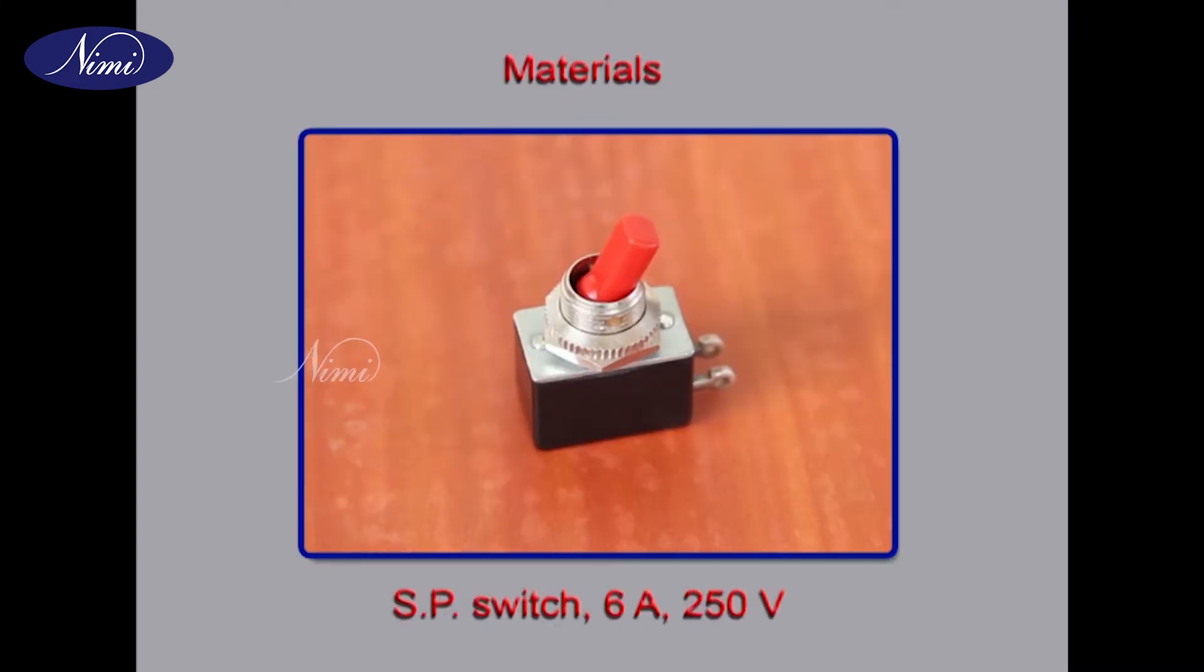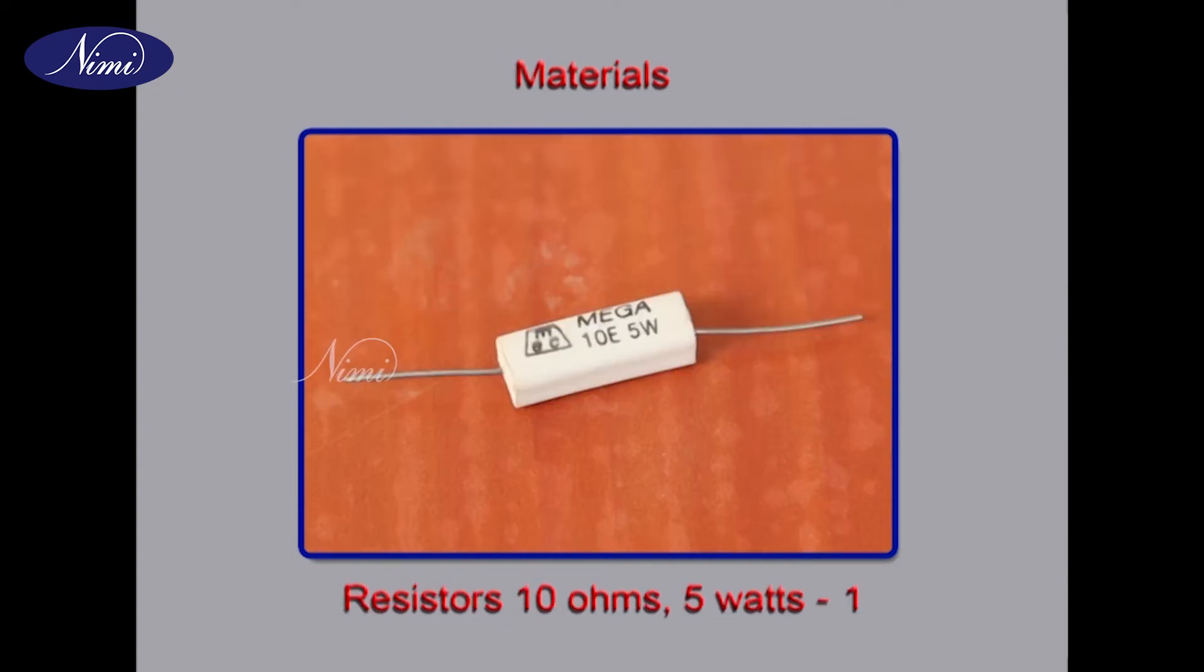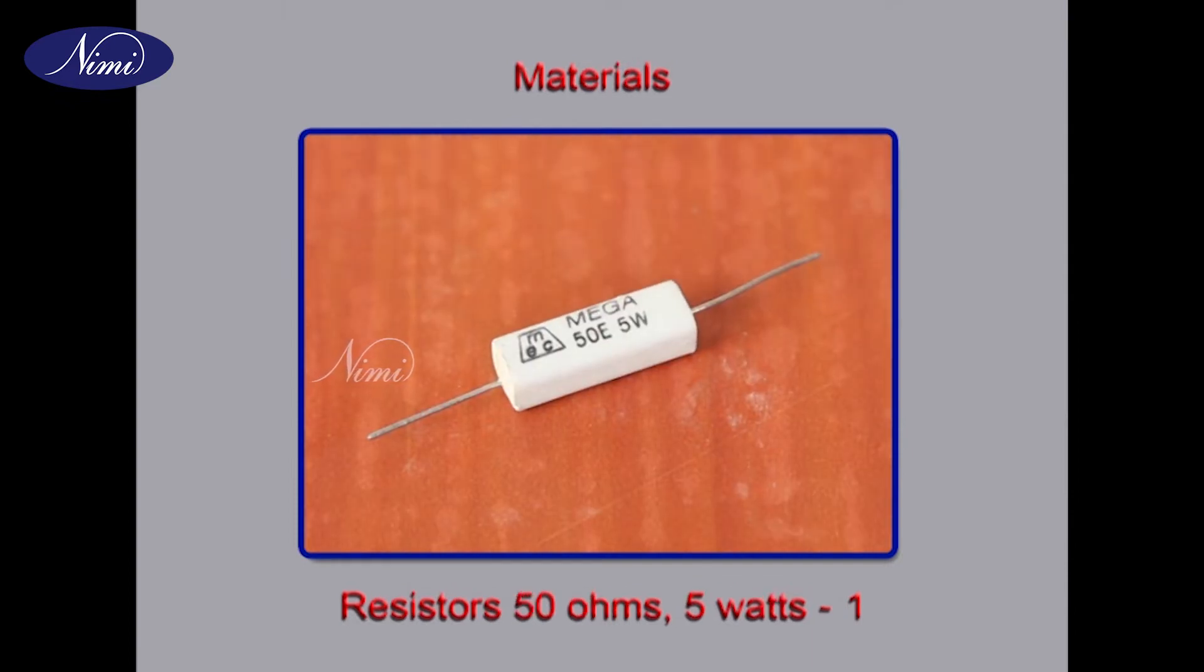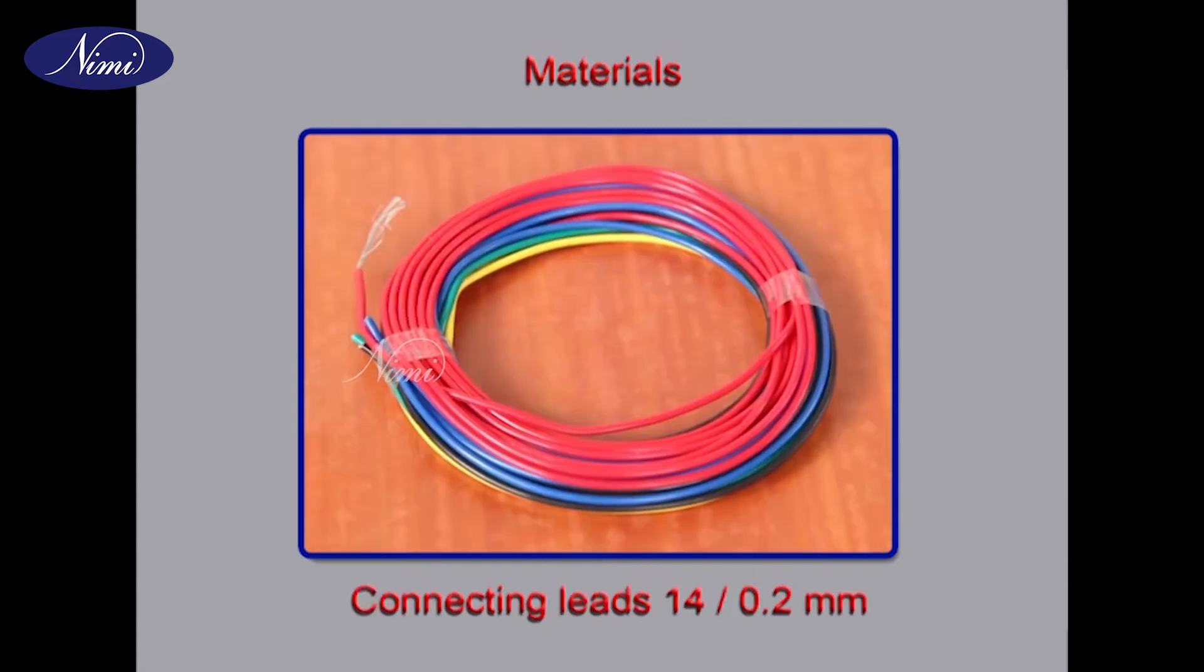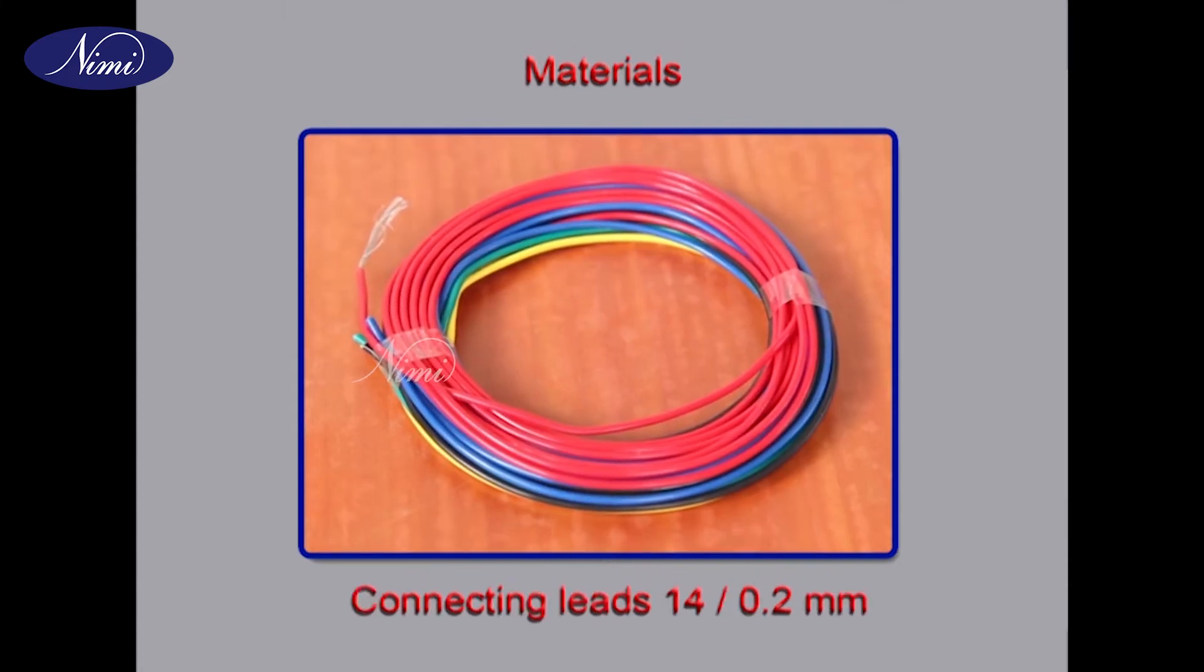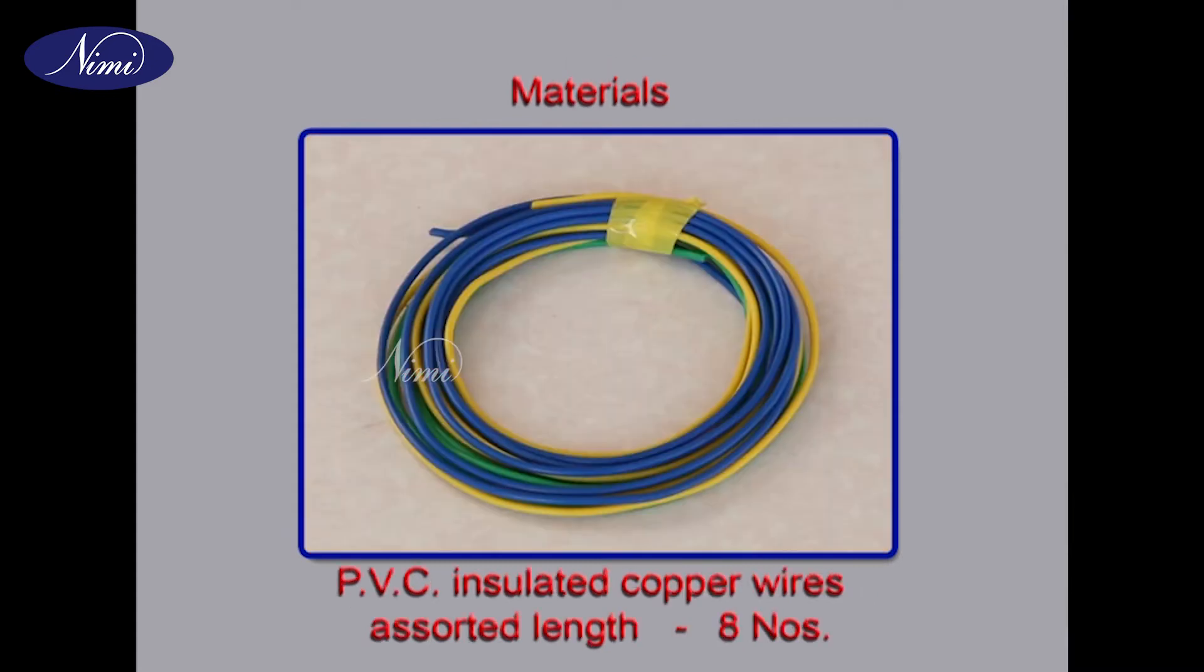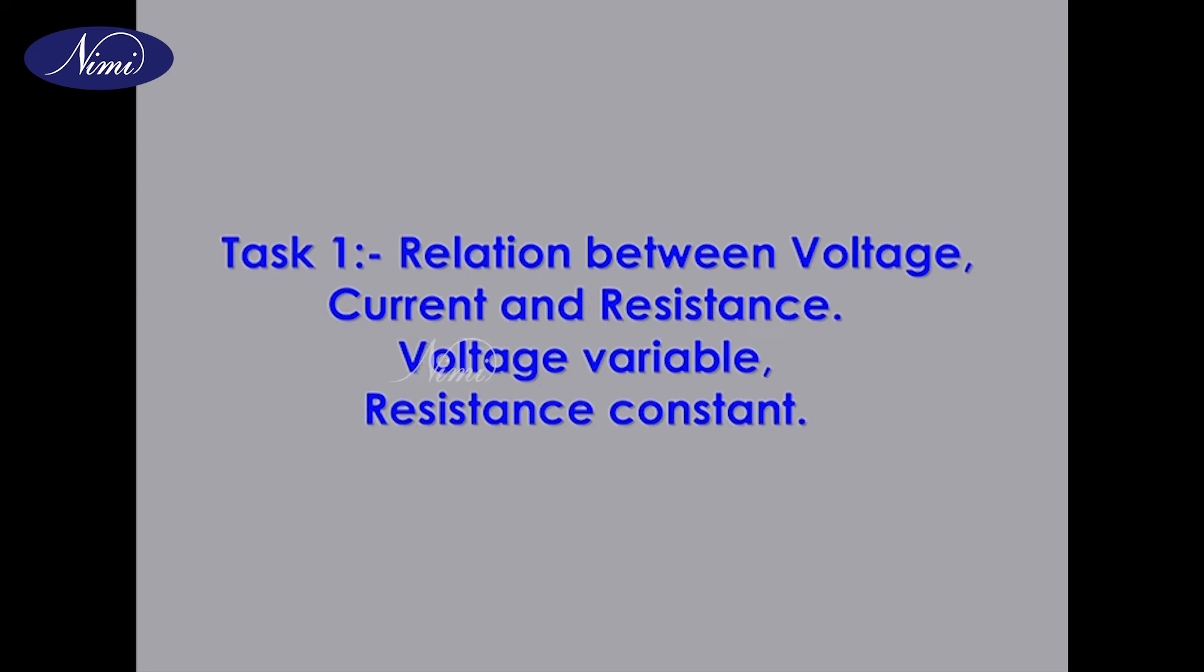Materials: SP switch 6 amperes 250 volts, Resistors 10, 20, 50 ohms 5 watts one each, Resistors 20 ohms 2 watts one, Connecting leads 14 by 0.2 millimeters PVC insulated copper wires assorted lengths eight. Procedure Task One: Relation between voltage, current and resistance - voltage variable, resistance constant.